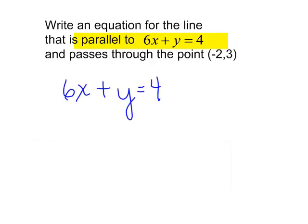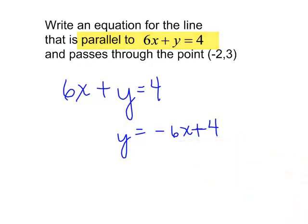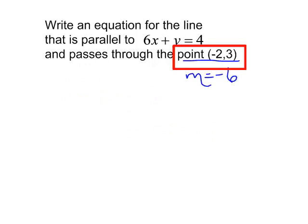I will subtract 6x from each side. The slope of this line is negative 6. Now, since my line is going to be parallel, I'm going to use the same slope. I will have my point, I will have the slope, negative 6, and now I am ready to plug it into my equation.